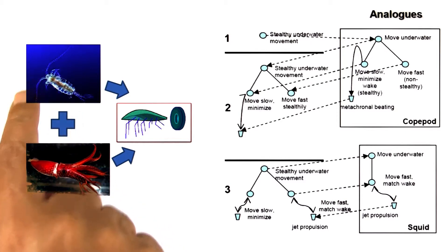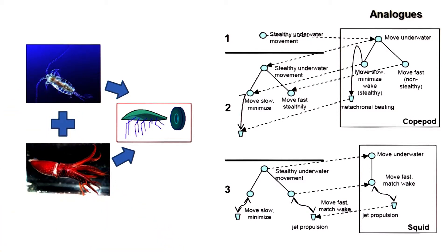A copepod is a biological organism that has a large number of appendages. It moves underwater in such a way that it generates minimum wake, especially when it moves very slowly. On the other hand, when it moves rapidly, then the wake becomes large. When the wake is small, then its motion is very stealthy. When the wake is large, its motion is no longer stealthy.